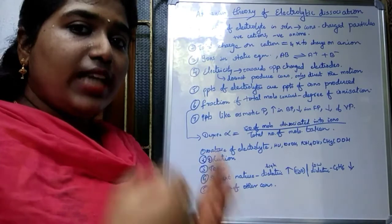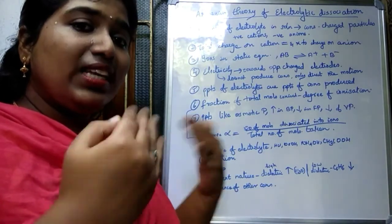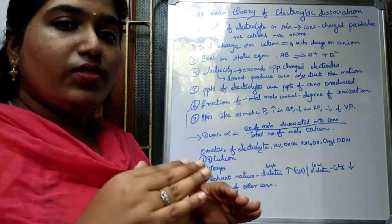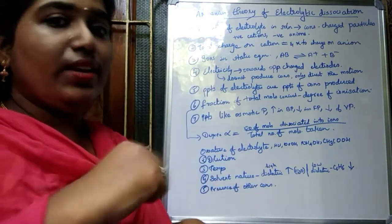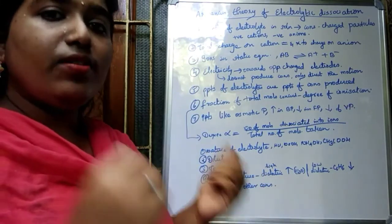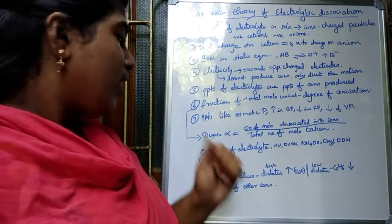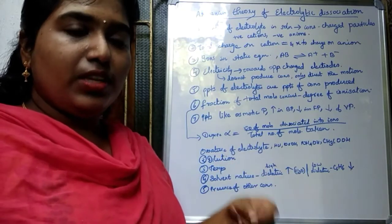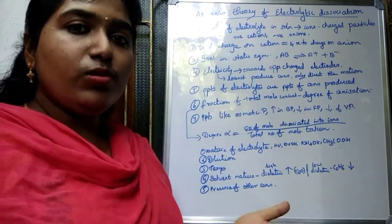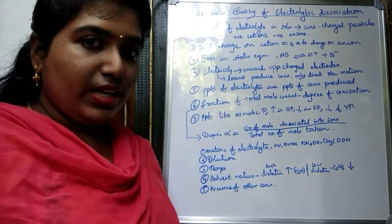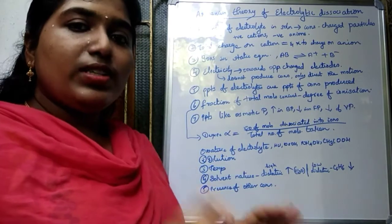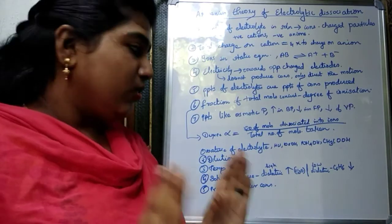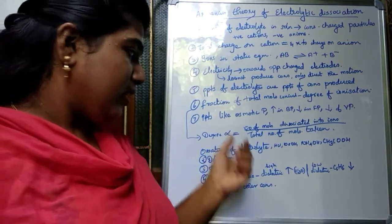The second factor is dilution. On dilution, the dissociation increases, and on complete dilution the degree of dissociation goes to infinity — that is called infinite dilution. The third factor is temperature. As temperature increases, the dissociation also increases. So temperature is another factor affecting the degree of ionization.